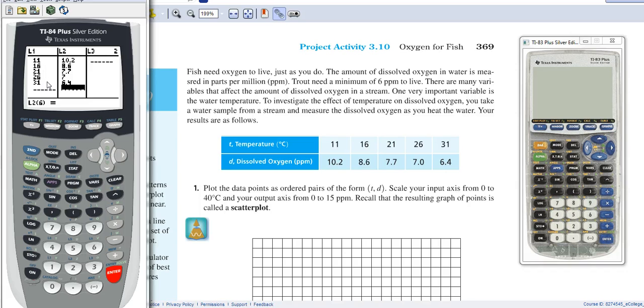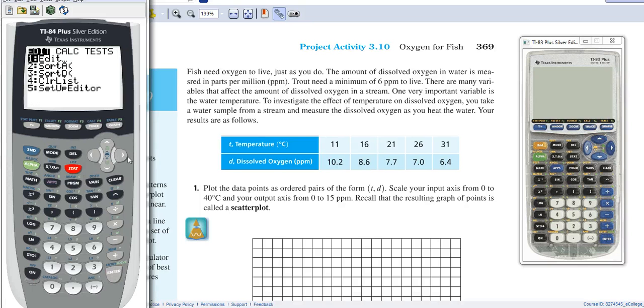Okay, now that the information is into our calculator, L1 and L2, we're going to have the calculator compute the regression equation. So STAT, right arrow, calculate, and if you see here that it says linear regression, so it's number 4, so we're going to hit number 4.